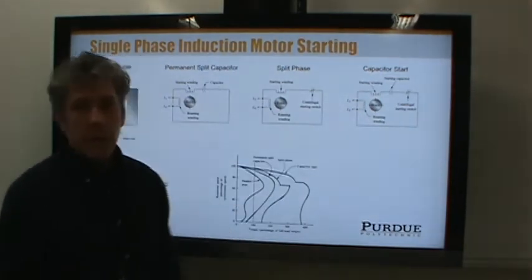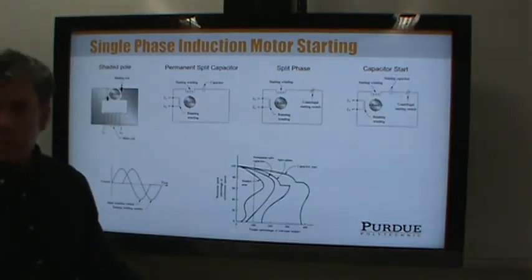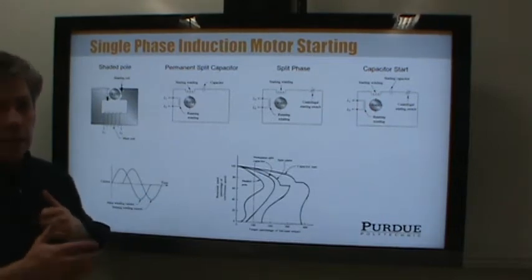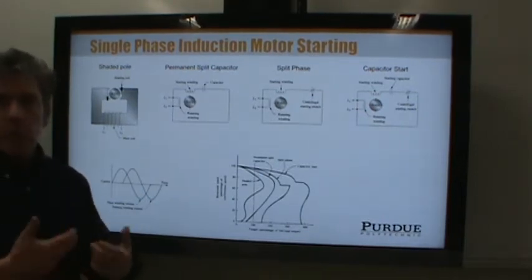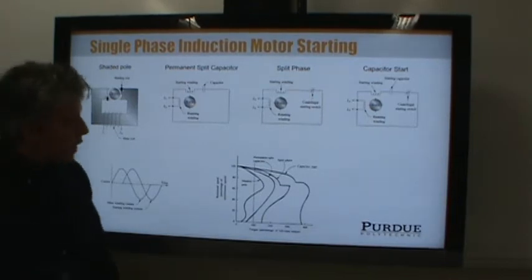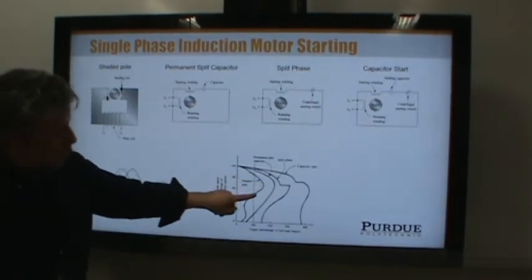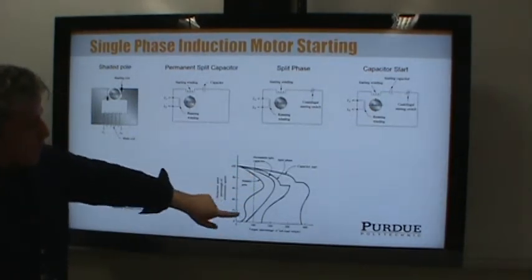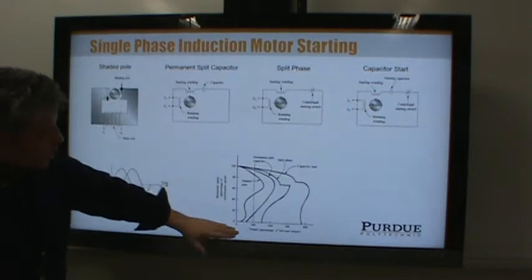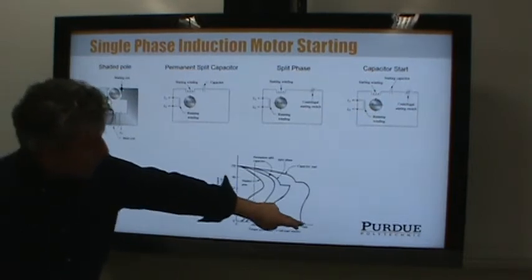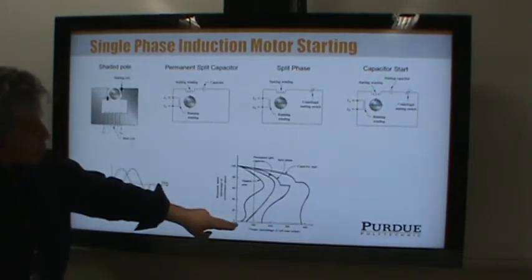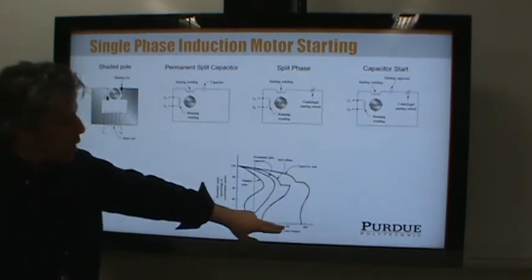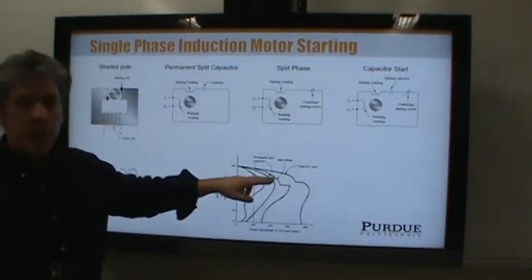Disconnecting the start winding allows the motor to run at higher efficiency. This is just a mechanical and electrical mechanism to get the motor to start turning, then let it continue at higher efficiency. You'll notice the shaded pole motor curve is pretty poor — relatively low torque versus speed — whereas the capacitor start is ideal for a compressor.